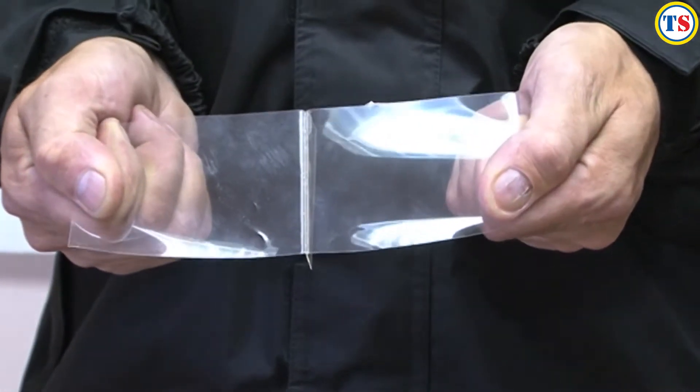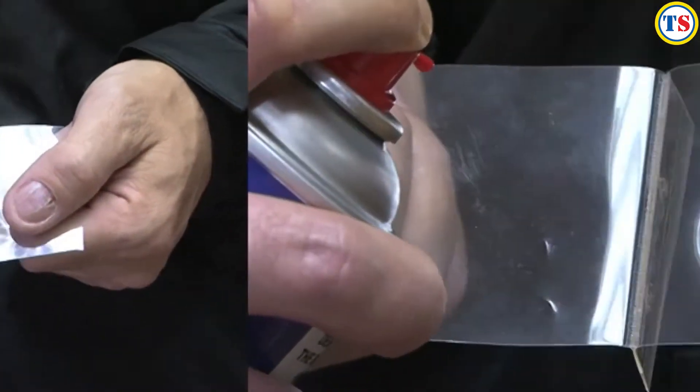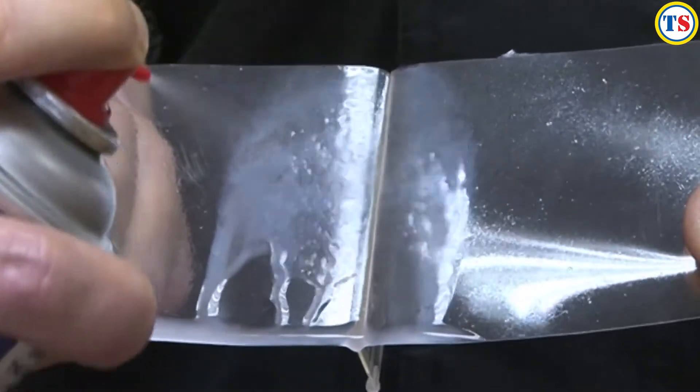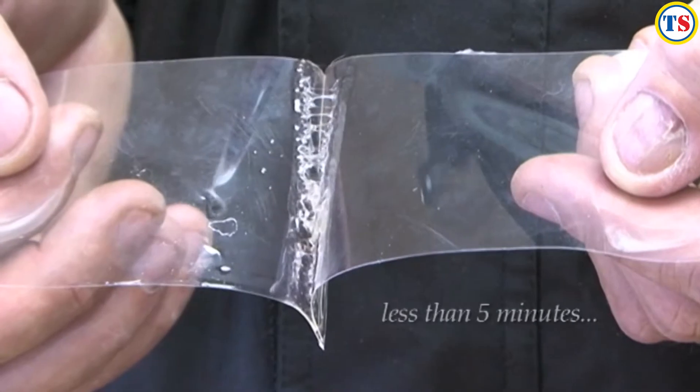Multisolv makes easy work of deactivating adhesives. Take a look at this strong acrylic bond and how easy Multisolv removes it. Simply spray on, leave for 4-5 minutes and see the result.